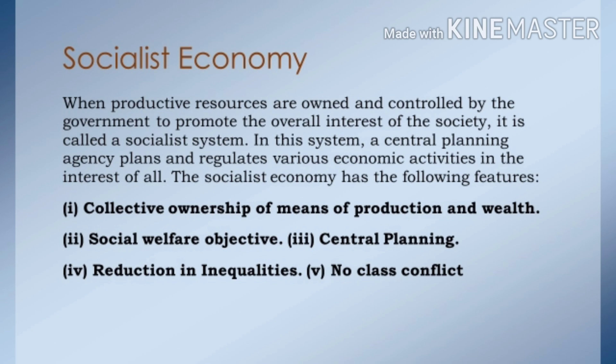The third feature is Central Planning — all economic decisions regarding production, consumption and investment are made by the government, keeping in mind the present and future needs. The fourth feature is Reduction in Inequalities — the non-existence of private property and accumulation reduces economic inequality in a socialist economy. The fifth feature is No Class Conflict — all are co-workers in a socialist society and there is only the working class, hence there is no conflict.